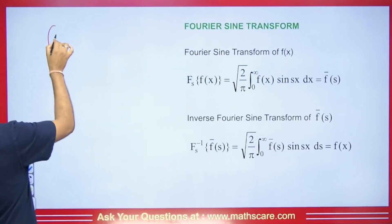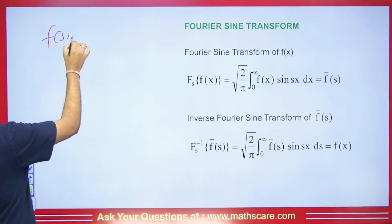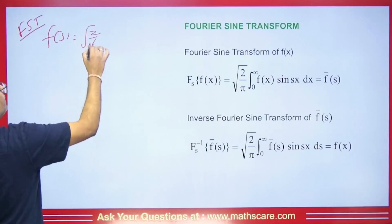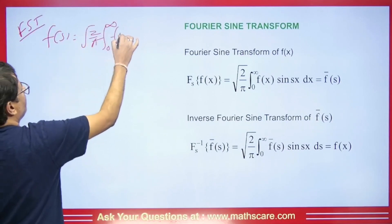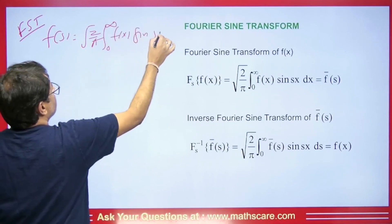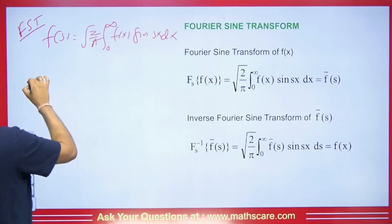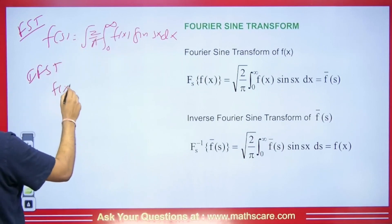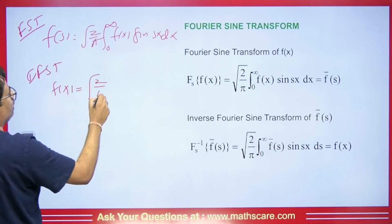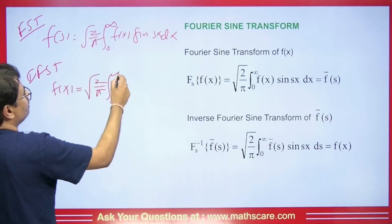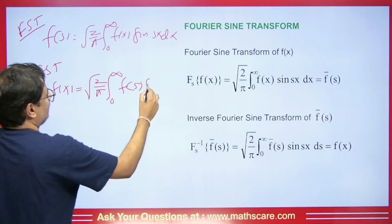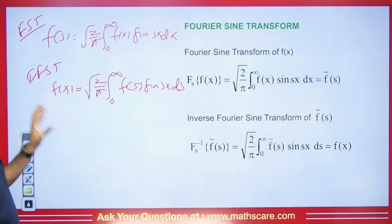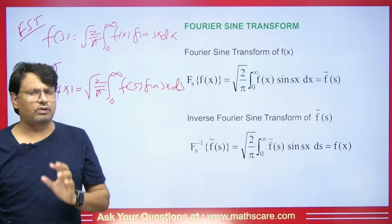If any function is given and you know the formula for its Fourier sine transform, we call it FST. Its formula is root(2/π) from 0 to infinity f(x) sine(sx) dx. For the inverse Fourier sine transform, f(x) = root(2/π) from 0 to infinity f(s) sine(sx) ds. So this is our Fourier sine transform formula and this is its inverse.